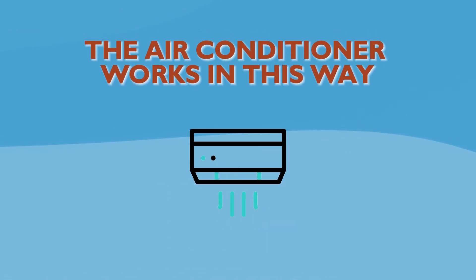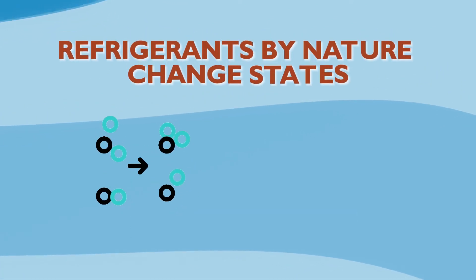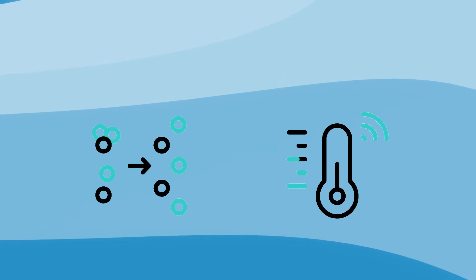The air conditioner works in this way because the compressor can force a phase conversion in the refrigerant. Refrigerants, by nature, change states at comparatively low temperatures.